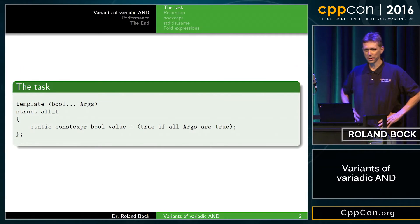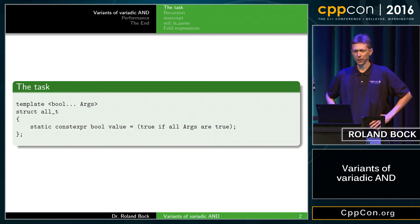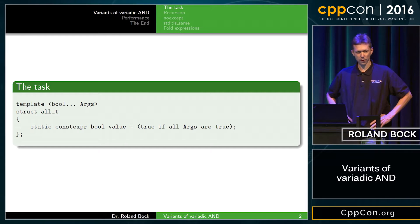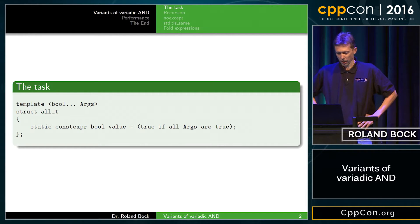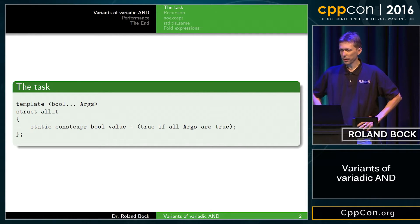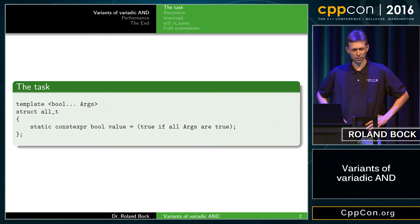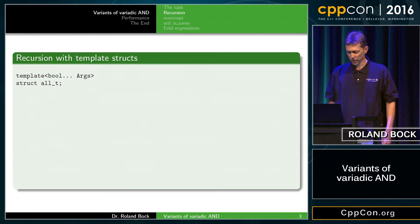So this is the task. I want to have a template struct that takes any number of bool arguments, and it should have a value, and the value should be true if all the arguments are true. I'm going to show several variants of trying to do that.